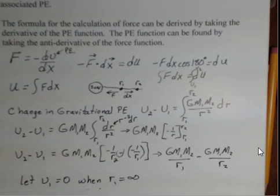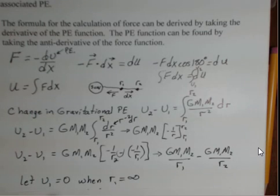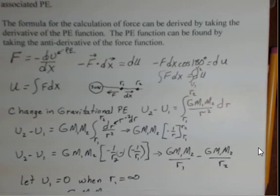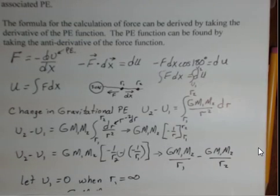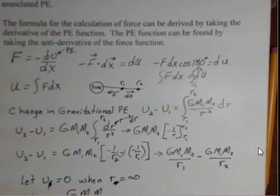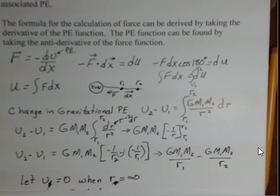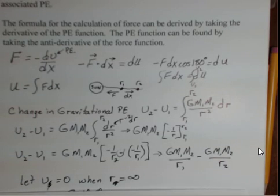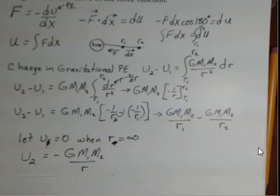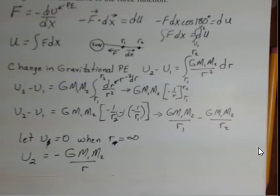Let's let U1 equal zero for the case of R1 equals infinity. You always have a choice of where to set the potential energy equal to zero — it doesn't affect the working of the problem but it simplifies the expression. We'll let the potential energy be zero when the distance between the two objects is infinite. That makes sense: there's zero force and infinite distance between the two objects.